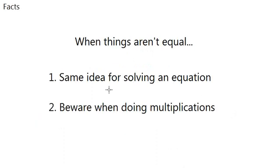Equations can be not equal sometimes, and we have special signs for that, which is the arrow sign. It's basically the same way you solve normal equations, but when you're doing multiplications, some kind of a trap can come up, and you have to beware.